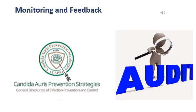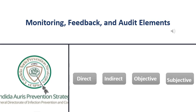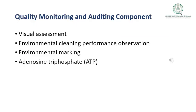Another key outline for today's session is monitoring and providing on-site feedback and audit elements. It is important to have regular monitoring and feedback to improve environmental cleaning and disinfection practices. This can be through direct on-site feedback or through regular reports and KPIs to departments. Specific measures for monitoring quality include visual assessment, environmental cleaning performance observation, environmental marking, and adenosine triphosphate — or ATP — testing.